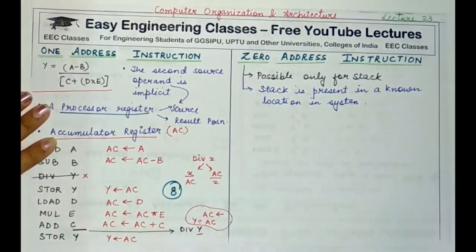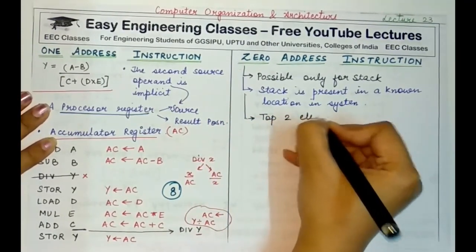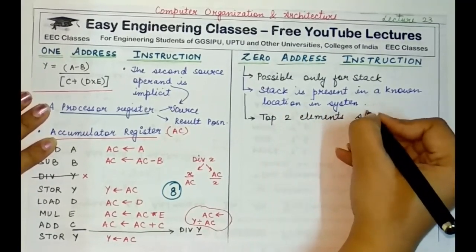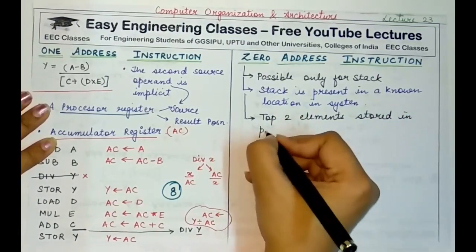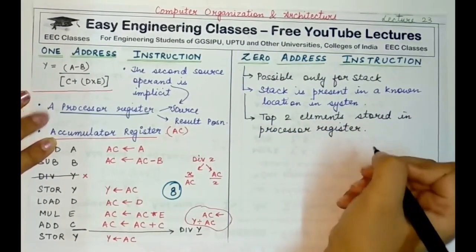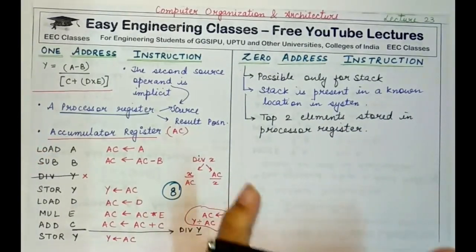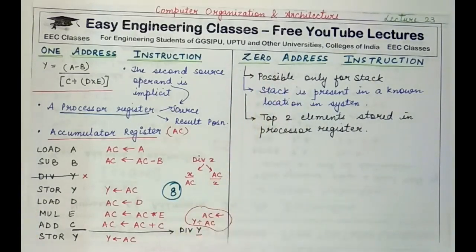Some systems store the top two elements of the stack in processor registers for fast access. Operations like push and pop — retrieving the top element — never require you to specify any operand or address, because the processor already knows the top of stack address. That is why no address specification is needed, and hence it is called a zero address instruction.